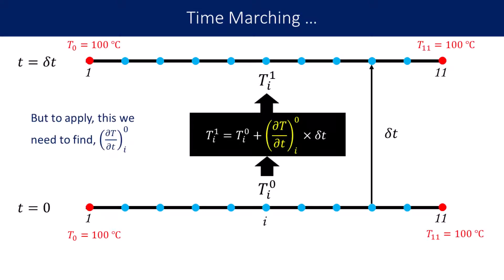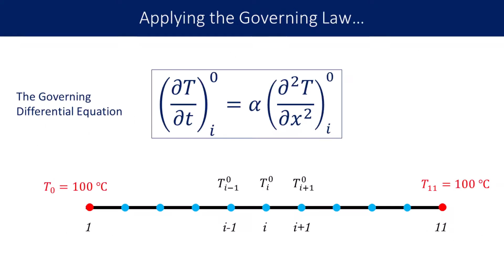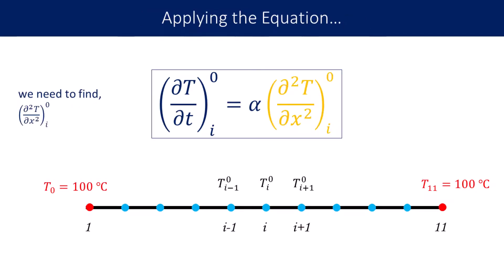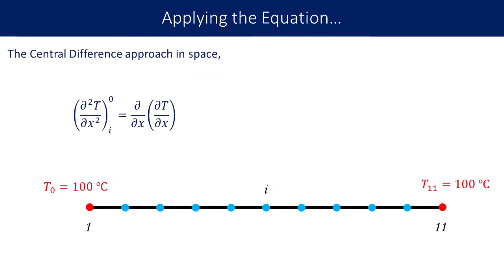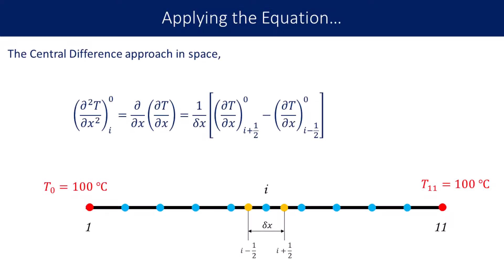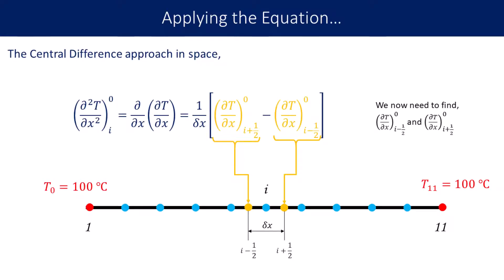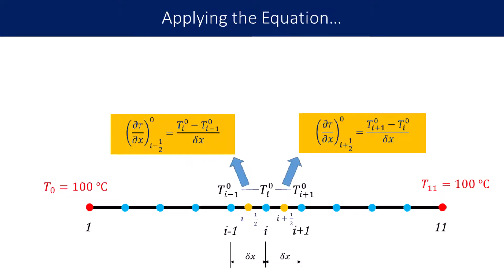To step ahead in time, we need the time derivative. To find the time derivative, we use the 1D heat equation, where the time derivative is expressed in terms of the temperature gradient. To find the temperature gradient at the ith node, we use the central difference scheme. For this, we need the x-derivative of temperature at locations i minus half and i plus half. Here, i minus half corresponds to the location midway between the (i-1)th node and the ith node, and i plus half corresponds to the location midway between the ith node and the (i+1)th node — separated by a distance of delta x, that is 0.1 meter. We again apply a central difference scheme at each of these midpoints.